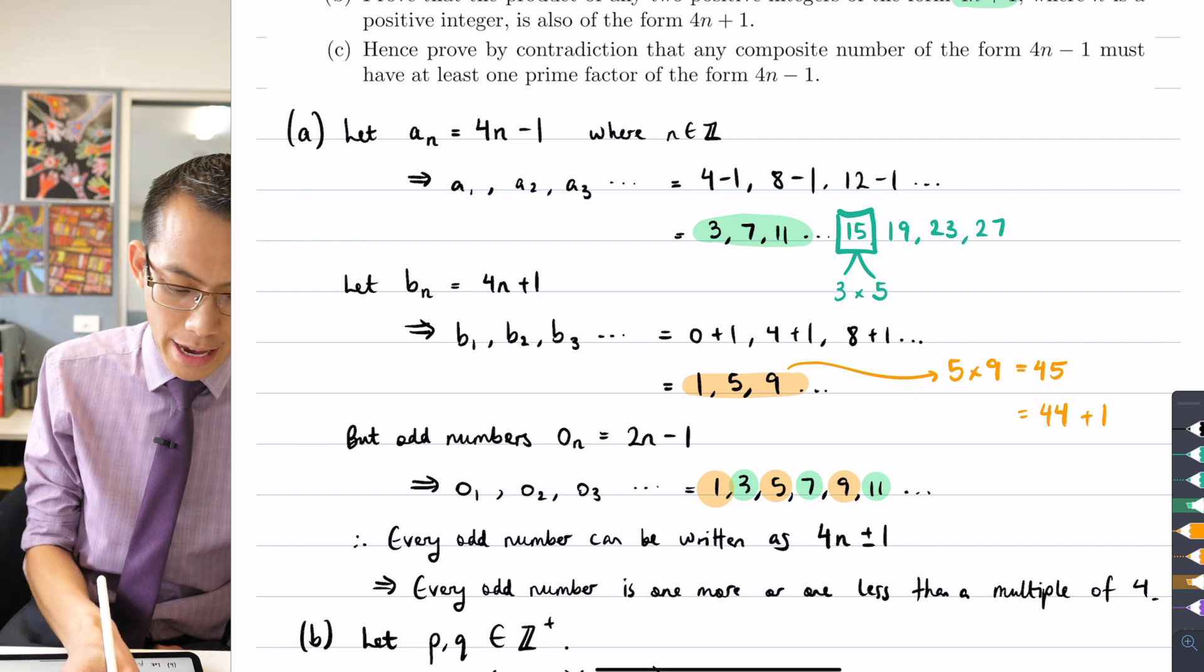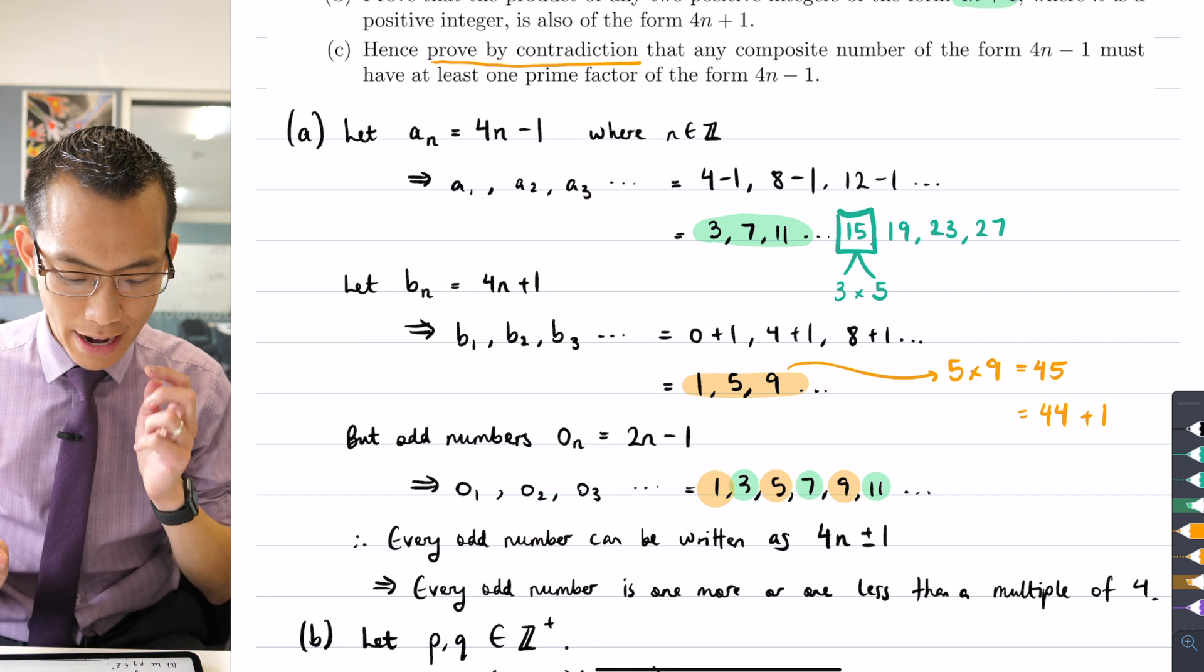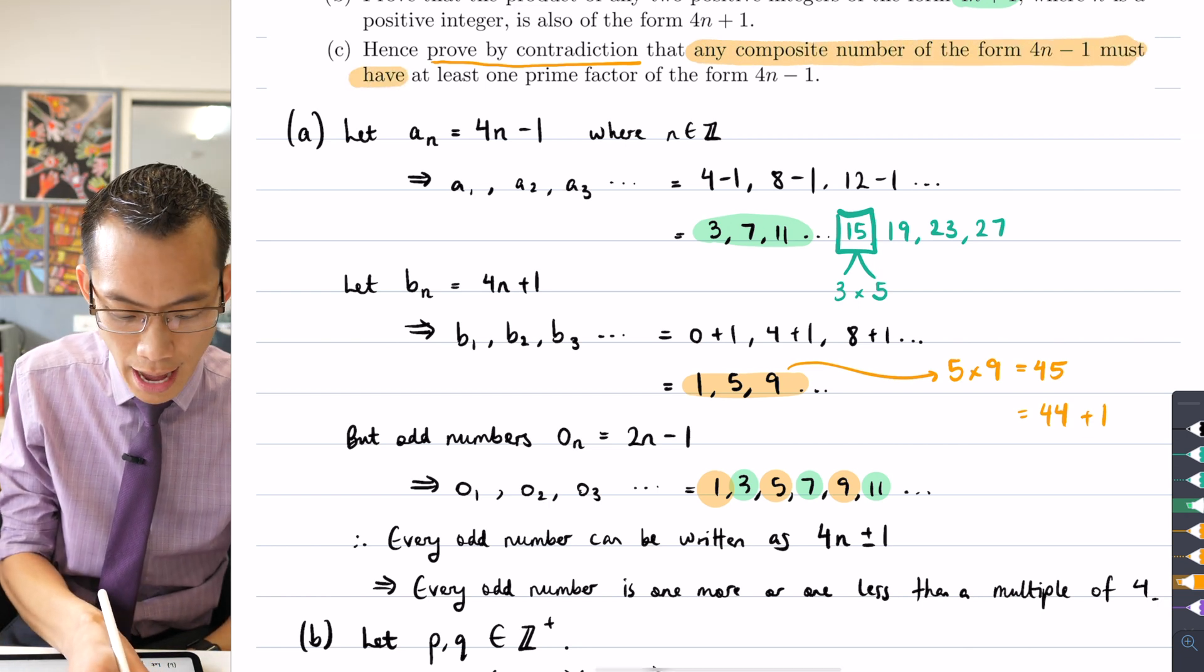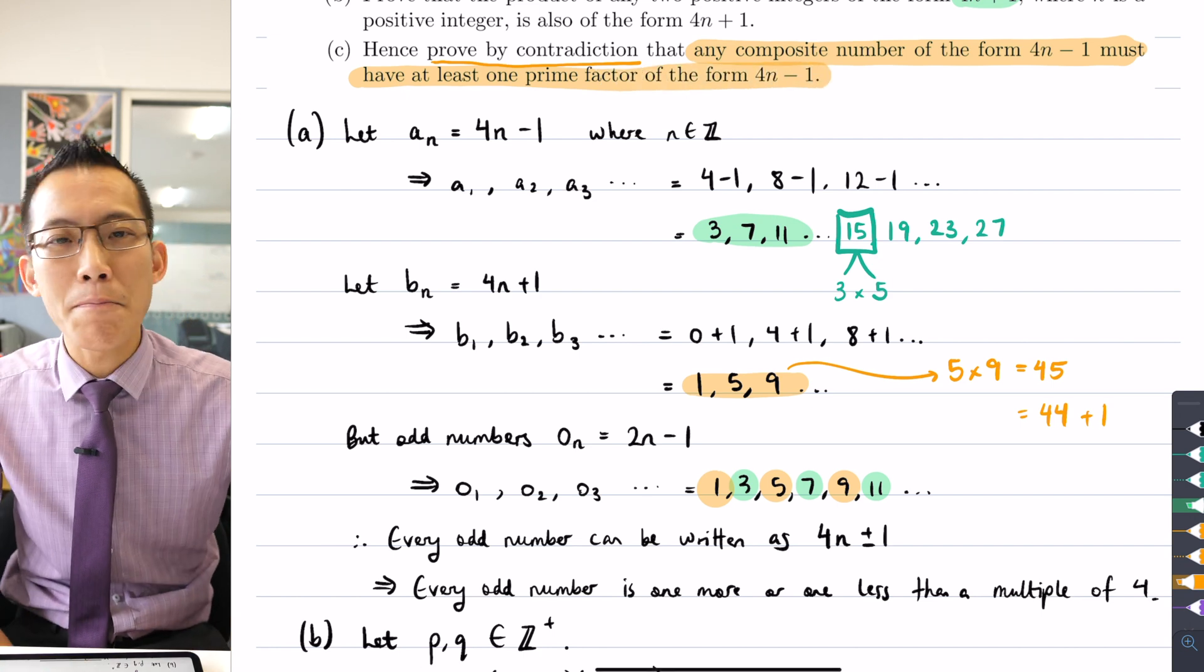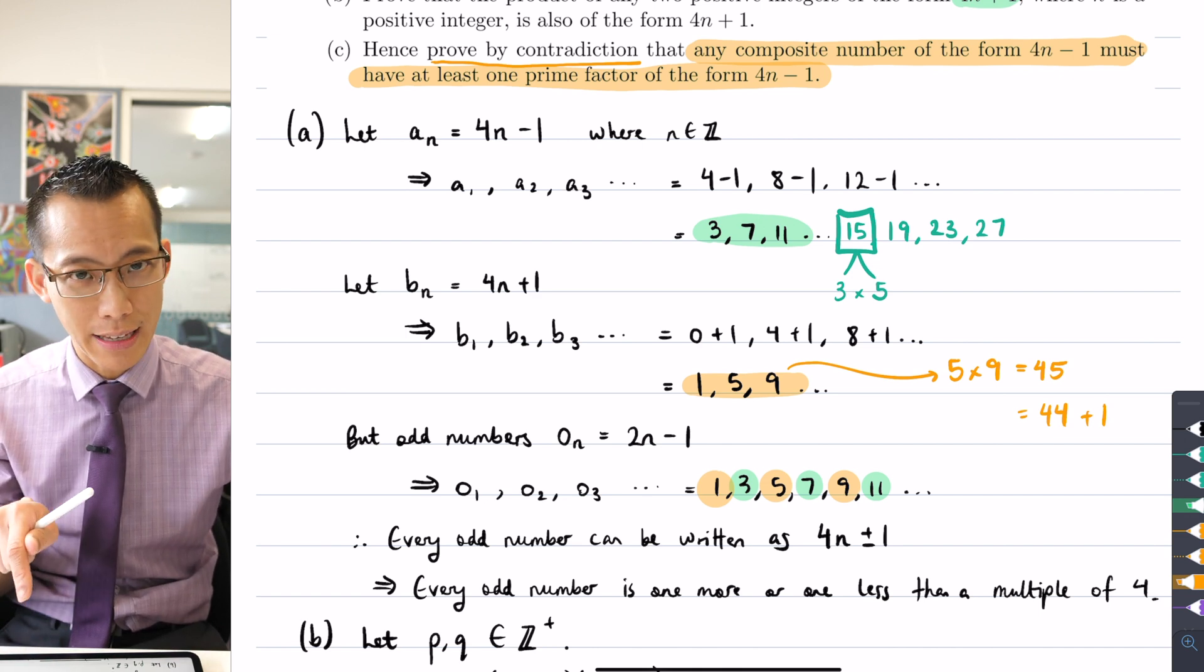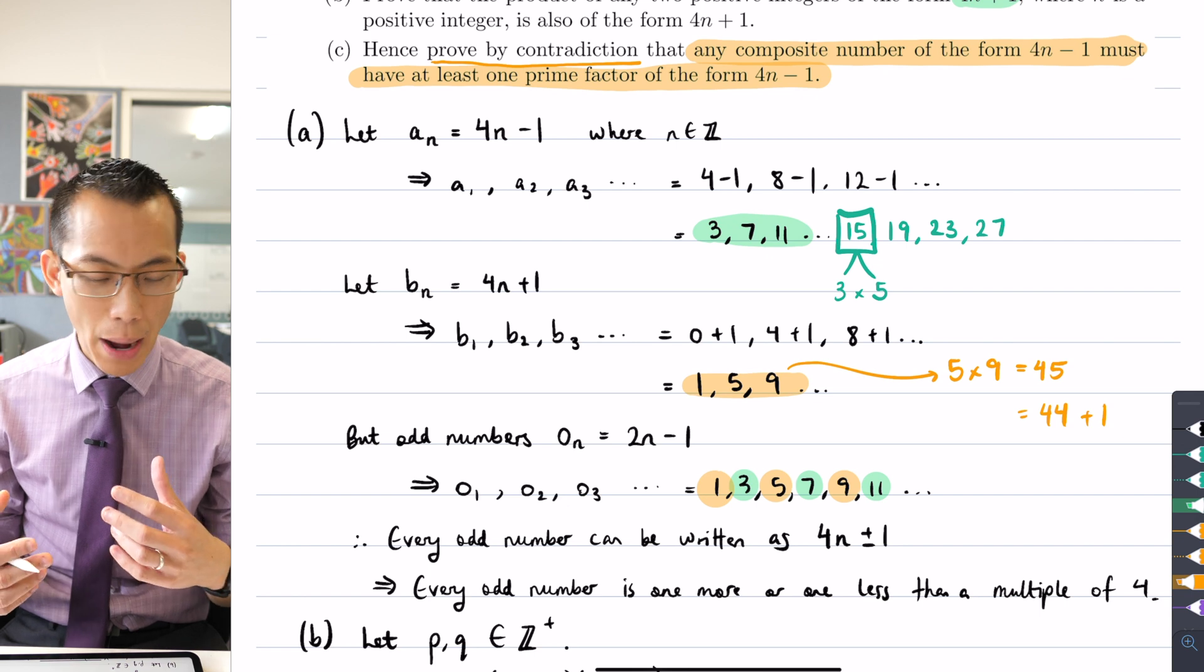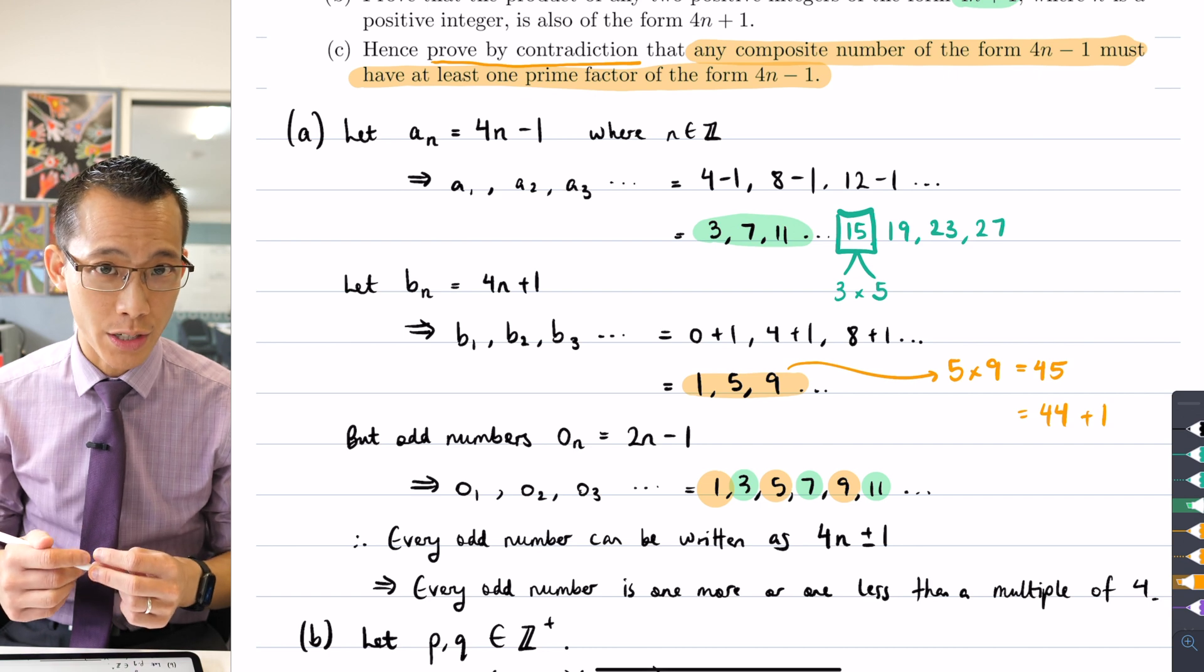But they've also said prove this by contradiction. So I need to try and go about this in an indirect way. This statement here, any composite number of the form 4n minus 1 must have at least one prime factor of the form 4n minus 1. Take a breath. If I want to prove this by contradiction, what I have to prove is that the negation of this implication, the negation of this statement, is false.